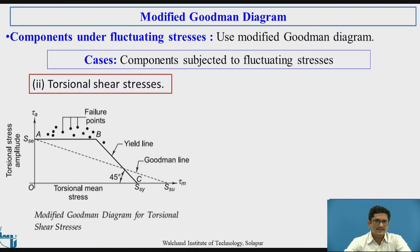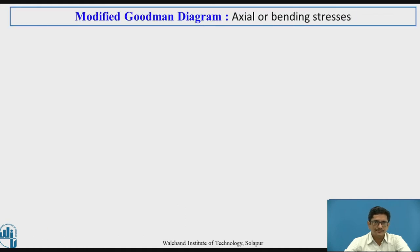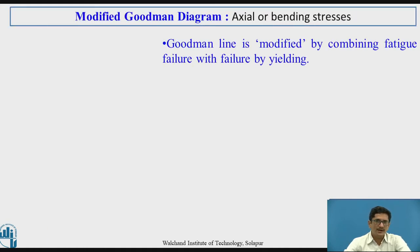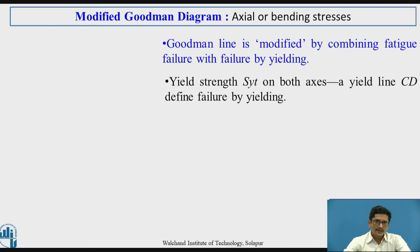For torsional shear stress, on the x-axis it is SSY and SSU, and on the y-axis it is SSE, which is the endurance limiting shear stress. Now let us see Case 1 — how to draw the modified Goodman diagram for axial or bending stress. A Goodman line is modified by combining fatigue failure with the failure by yielding. Yield strength SYT is plotted on both axes, and a yield line CD is drawn which defines the failure by yielding.